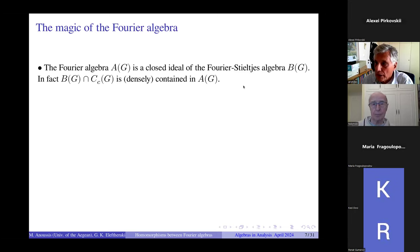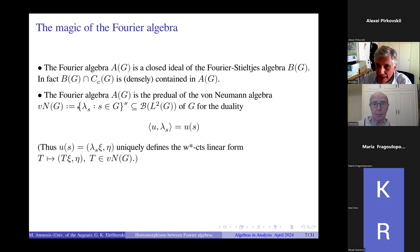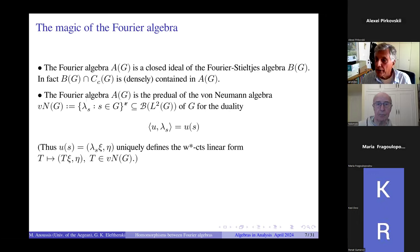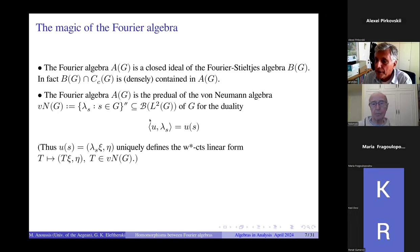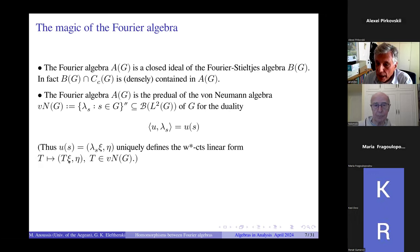The basic contributions of Eymard's definition are some very striking properties of the Fourier algebra A of G. First of all, it is included in the Fourier-Stieltjes algebra and is a closed ideal in there with the same norm. Also, if you take an element of the Fourier-Stieltjes algebra that happens to have compact support, it belongs to A of G, and such functions form a dense subspace of A of G, giving very nice approximation properties.